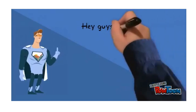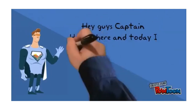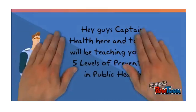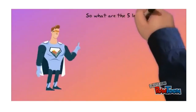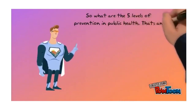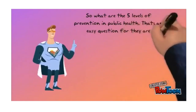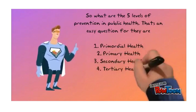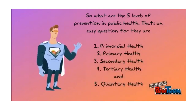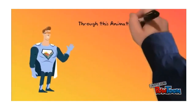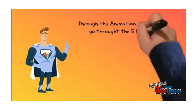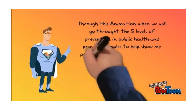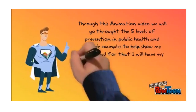Hey guys, Captain Health here. Today I will be teaching you the five levels of prevention in public health. The five levels are: one, primordial prevention; two, primary prevention; three, secondary prevention; four, tertiary prevention; and five, quaternary prevention. Through this animation video we will go through all five levels and provide examples, with help from sidekick DJ Health.